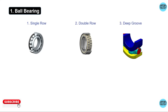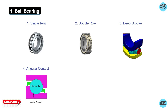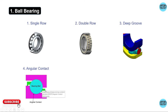Deep groove ball bearings are used at very high rotational speeds because they offer low friction, low noise, and low vibration. Next is the angular contact ball bearing, where the inner and outer ring are in contact with the ball at an angle, so it can take both radial and axial load simultaneously. The load carrying capacity depends upon the ball and ring contact angle.